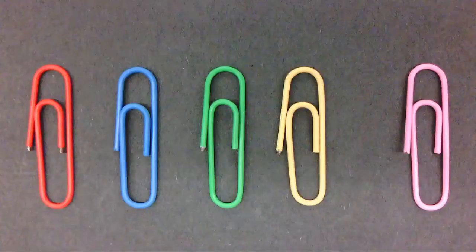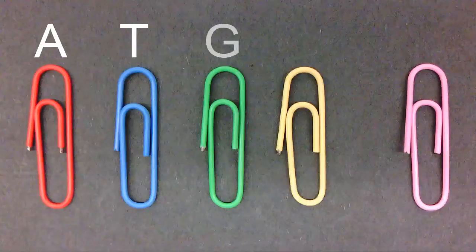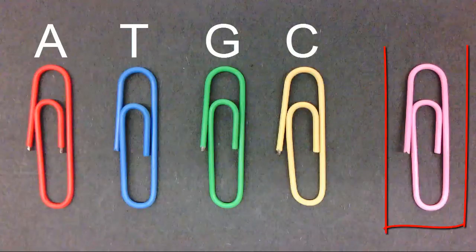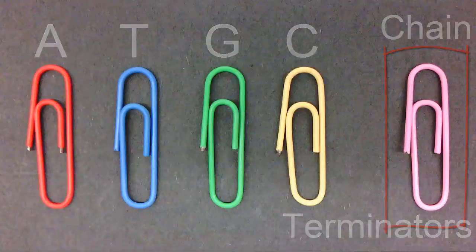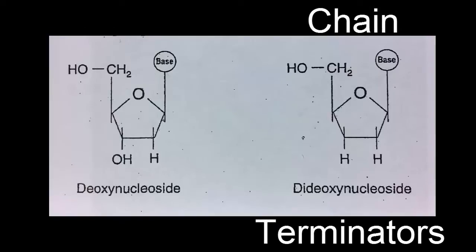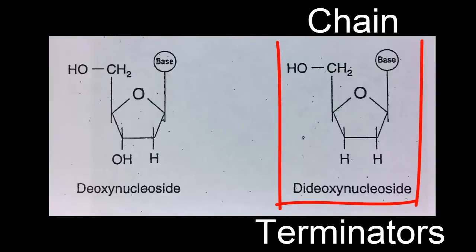The red will represent adenine, the blue will represent thymine, the green will represent guanine, and the yellow will represent cytosine. The pink paper clip will represent chain terminators, which are also called dideoxynucleotides.